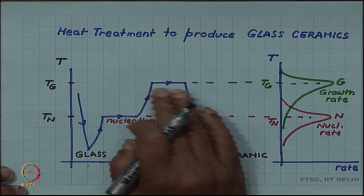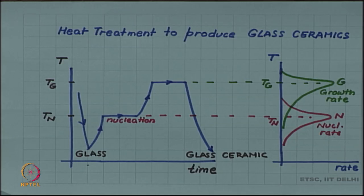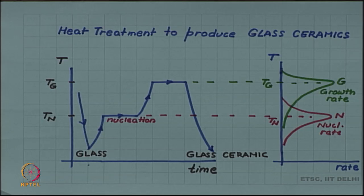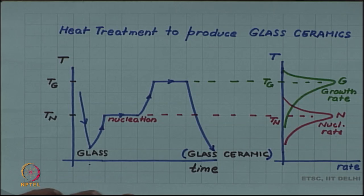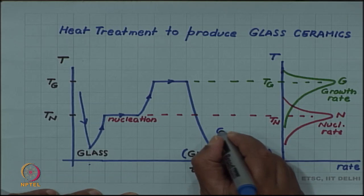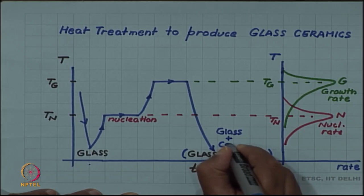Finally, the material is quenched to form the so-called glass ceramic. In this glass ceramic, in fact it is not fully crystalline. It is actually glassy plus crystalline. Some glass matrix is also there, glass matrix plus crystal.